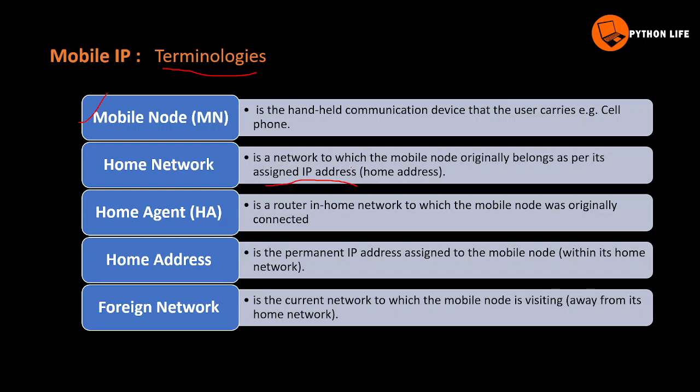Home network is a network to which the mobile node originally belongs, as per its assigned IP address or home address. Home agent is a router in the home network to which the mobile node was originally connected.